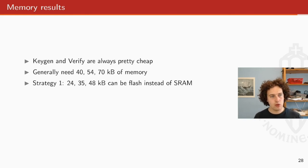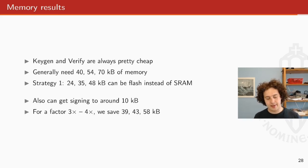For the memory, we see that the key generation and verification are always pretty cheap. But for signing, we generally need 40 to 70 kilobytes of memory, depending on the version of Dilithium. And we see that if we put some of that stuff in flash, then we can save 24 to 48 kilobytes of memory, which can be very useful. We can get signing down to around 10 kilobytes without optimizing a lot, without actually compromising the performance of the scheme anywhere. And for a factor of like, if we do signatures and for a factor of three times or four times, we can actually save 40 to 60 kilobytes of RAM.